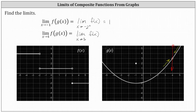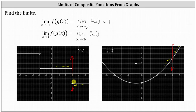Now we go to the graph of f of x, and we're approaching x equals three, this vertical line here, but from the left and the right. As we approach from the left, we're approaching from this direction; from the right, we're approaching from this direction. From the left, we're approaching y equals one; from the right, we're approaching y equals negative two. Because we're not approaching the same y value or function value, this indicates the limit doesn't exist. So the limit as x approaches four of f of g of x does not exist.